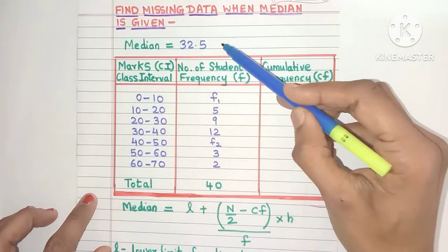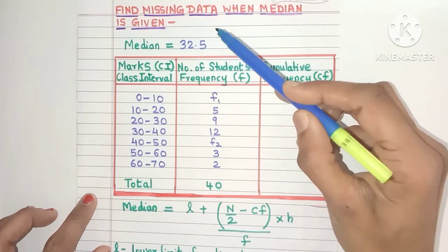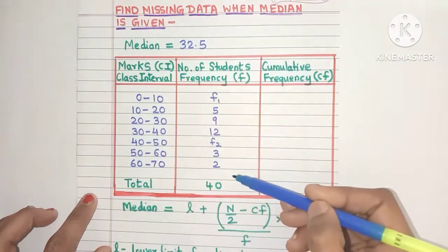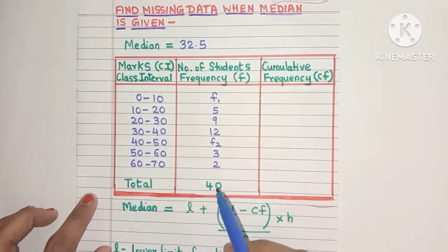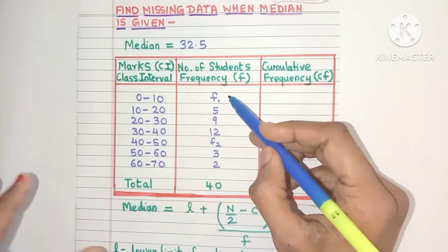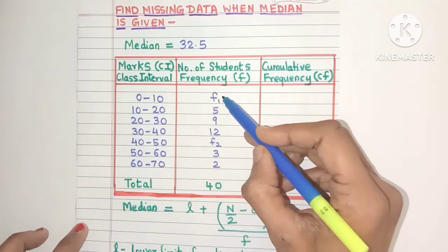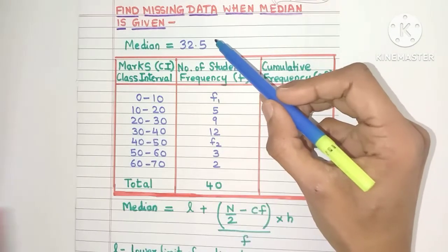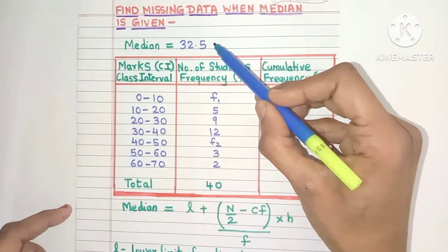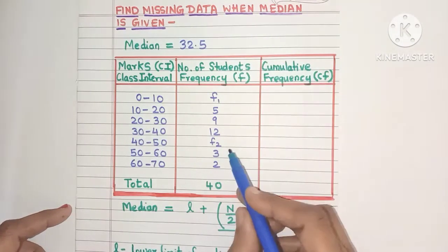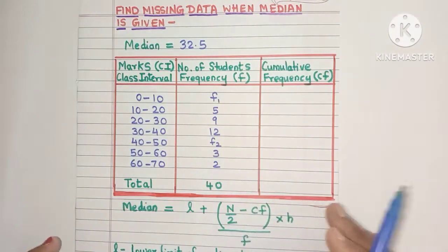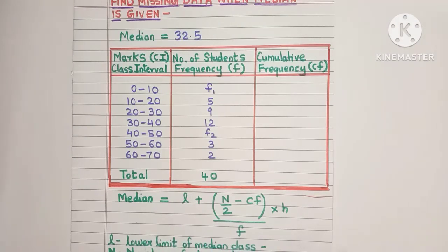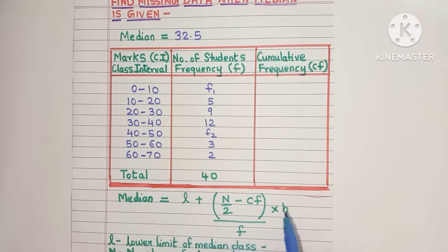The median is already given as 32.5, the total number of observations is given as 40, and we have to find out the missing frequencies f1 and f2. Because the median value is given, we will find out f1 and f2 using the median formula, which is l plus n by 2 minus cf divided by f into h.